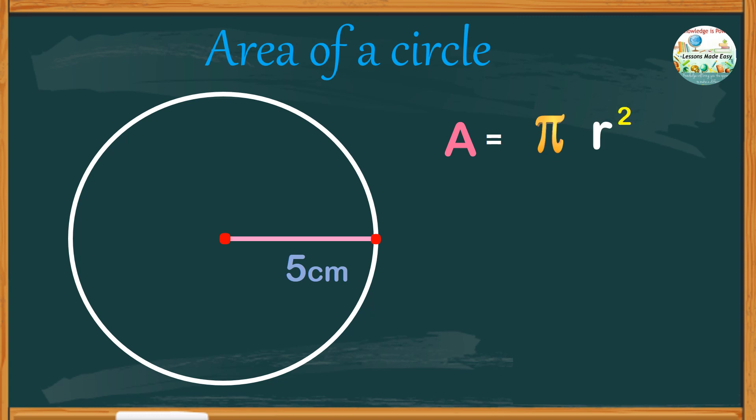But here is the struggle. Some students would think of r squared as r times 2, which is entirely different. r times 2 actually means you double the radius. So if the radius is 5 centimeters times 2, you'll get 10. Basically, if you double the radius, you'll get the diameter.